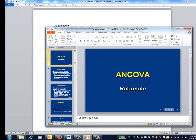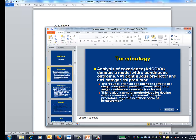This is the ANCOVA video on rationale. As a reminder, the analysis of covariance denotes a model with a continuous outcome, one or more continuous predictors, and one or more categorical predictors.